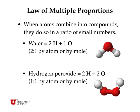The law of multiple proportions is slightly different. It says that when atoms combine into compounds, they do so in a ratio of small numbers. So water always has twice as many hydrogen atoms as oxygen atoms — a 2-to-1 ratio. It's never 2.1, never 2.85; it's always a simple ratio of small numbers like 2 to 1. Hydrogen peroxide, which is a different compound, has two hydrogen atoms and two oxygen atoms per molecule, so the atomic ratio is 1 to 1 by atom or by mole.